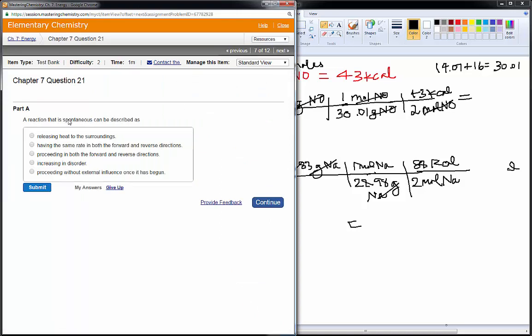All right. Spontaneous is looking at delta G. And what that means is that a process begins, or the reaction begins, and then it continues without any external influence. It might need external influence just to get started, but after it gets started, it just keeps going. And so, that is this one here, right?